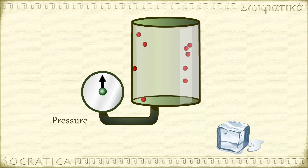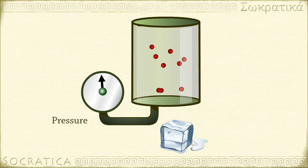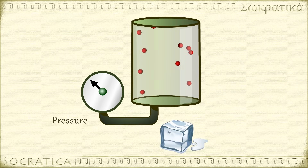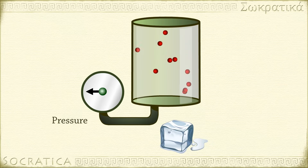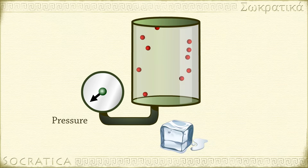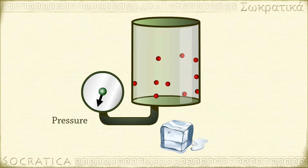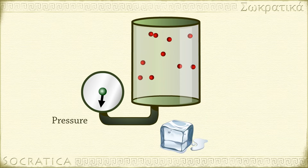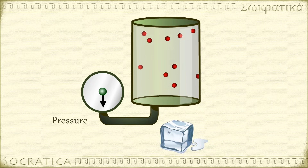The converse is also true. If you cool down this container of gas, that means the gas particles are moving more slowly. So there will be fewer collisions with the sides of the container per second, which means lower pressure.